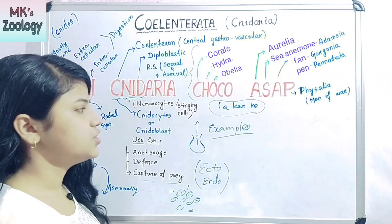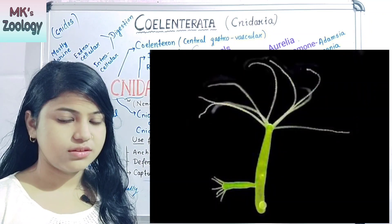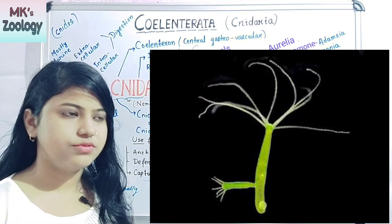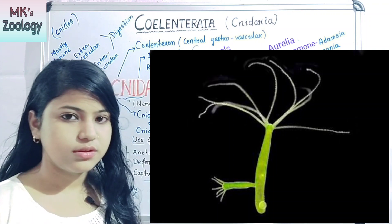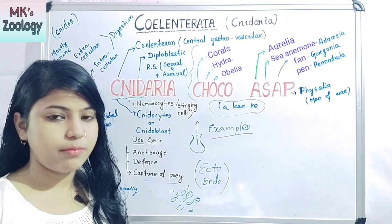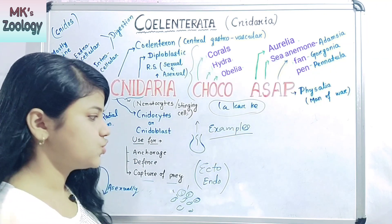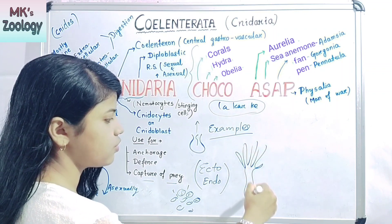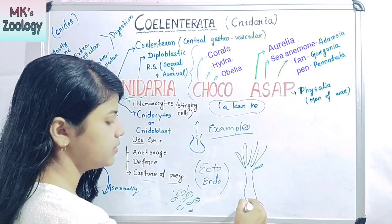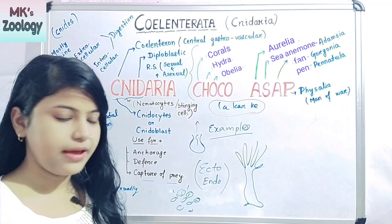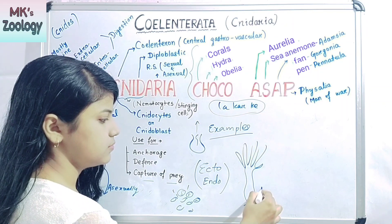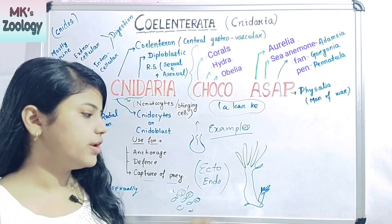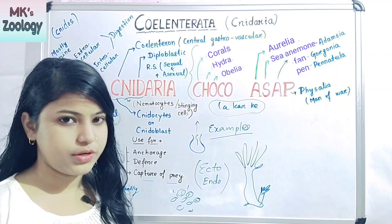The next letter H stands for Hydra. You may have read about Hydra in your textbooks. Hydra reproduces by budding, which is an asexual type of reproduction.